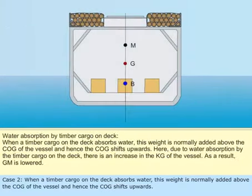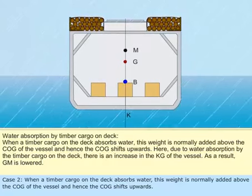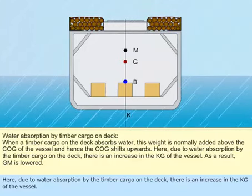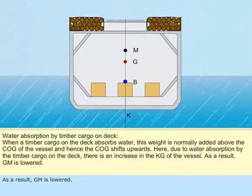Case 2. When a timber cargo on the deck absorbs water, this weight is normally added above the COG of the vessel and hence the COG shifts upwards. Here, due to water absorption by the timber cargo on the deck, there is an increase in the KG of the vessel. As a result, GM is lowered.